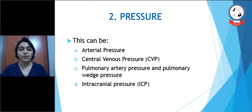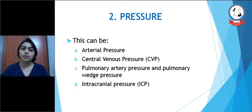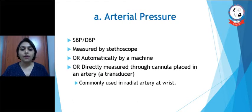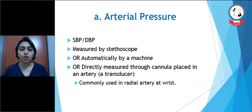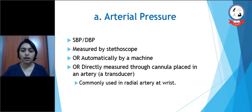Next is pressure. This can be either arterial pressure, central venous pressure, pulmonary artery pressure and pulmonary wedge pressure, and intracranial pressure. Let's see each one in detail. First is arterial pressure. We need to measure systolic as well as diastolic blood pressure. Either we can measure it by stethoscope, or automatically by machine, or directly measured through a cannula placed in an artery which is known as a transducer. Commonly the radial artery at the wrist joint is measured with the help of a transducer.